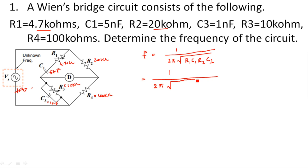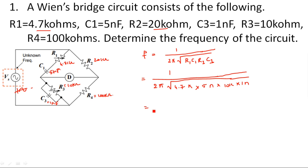Substituting: f = 1 / (2π × √(4.7k × 5n × 10k × 1n)). Simplifying this gives a frequency of approximately 3.2 kHz — more precisely 3.283 kHz. This is the frequency of oscillations of the Wien bridge circuit.